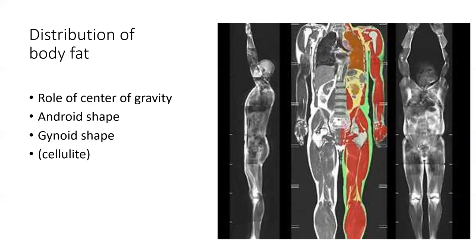Cellulite will go away if we lose total body fat, as we shrink down those adipocytes — it can lower the appearance of cellulite. It's really just subcutaneous fat, which is our better form of stored fat, because visceral fat or intra-abdominal fat is considered more dangerous compared to subcutaneous fat.